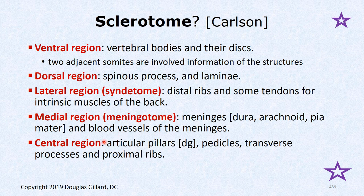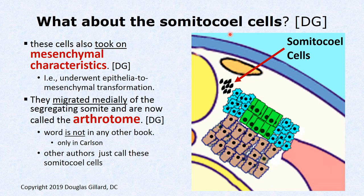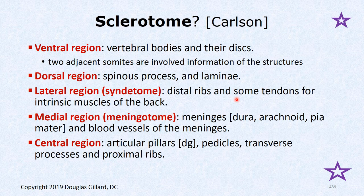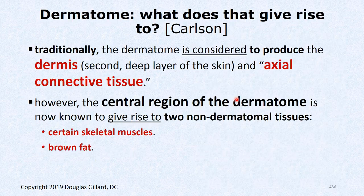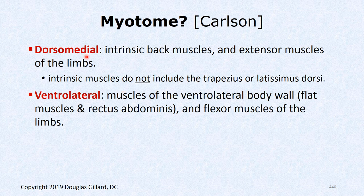The medial region Carlson calls the meningiotome — a good name because it gives rise to the meninges: the dura, arachnoid, and pia mater, and the blood vessels that supply those meninges. The very central region of the sclerotome gives rise to the articular pillars: the superior and inferior articular processes including the pars interarticularis, pedicles, transverse processes, and the proximal ribs.